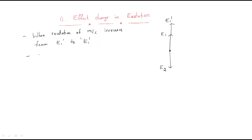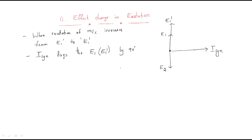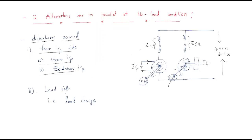It will generate some synchronizing current. That synchronizing current lags E1 — or E1 dash — by 90 degrees. That means there is a current produced which is the synchronizing current. When E1 increases to E1 dash, the no-load EMF increases for this machine. For the other machine the no-load EMF is lower, so automatically the circulating current will flow from this point to this point.